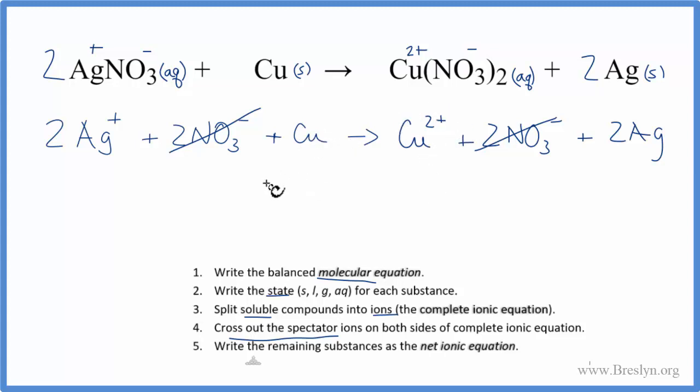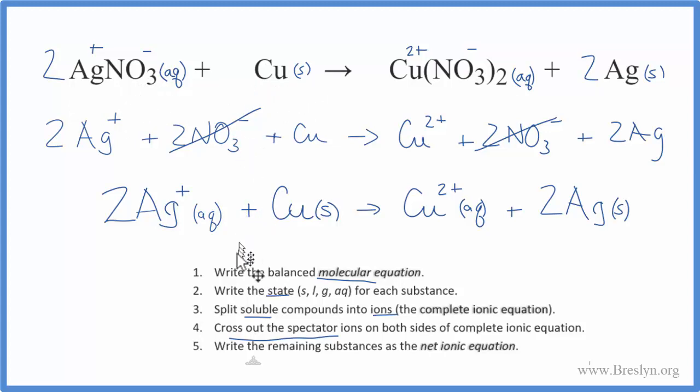At this point, we've crossed out the spectator ions, and we can write the net ionic equation. That'll look like this. So by following these rules, we could write the net ionic equation for AgNO3 plus Cu, silver nitrate plus copper. This is Dr. B, and thanks for watching.